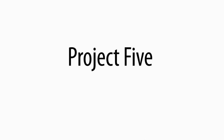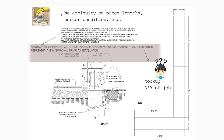Up here — no ambiguity. There's the whole plan: this seat wall consists of three pieces. I know the dimensions, what's happening at the corner, and whether it's mitered — there's a very clear intent. But there's a note that says 'contractor provide a full-size mock-up section of a precast wall for owner's approval prior to installation.' Full size? It's three pieces. What kind of mock-up is expected here?